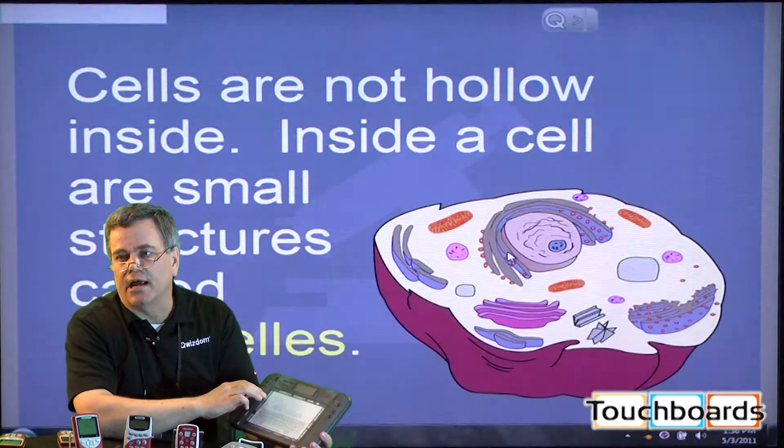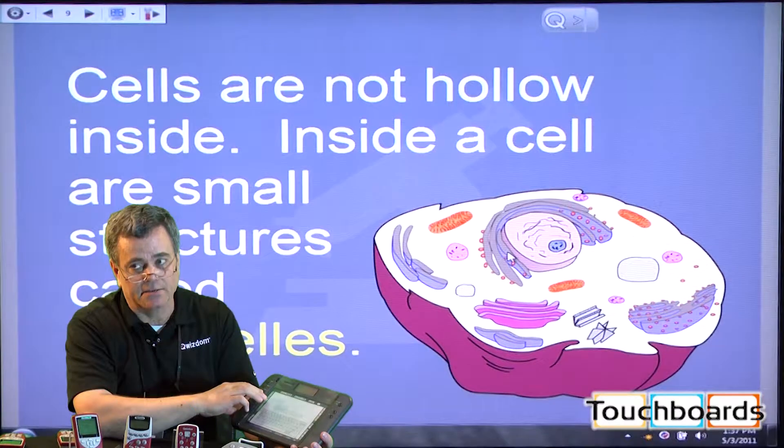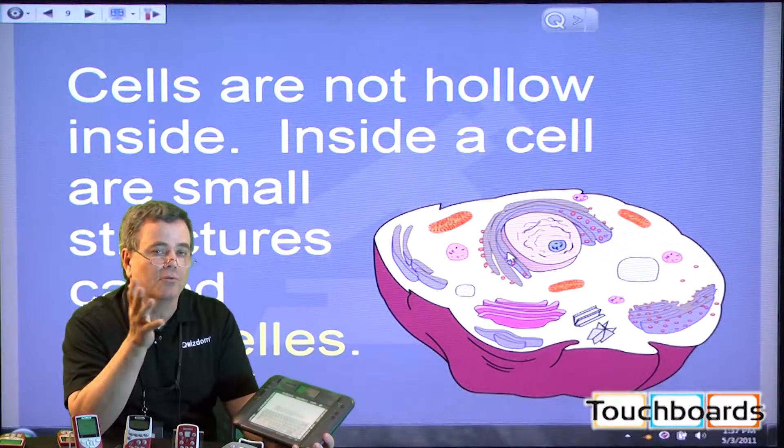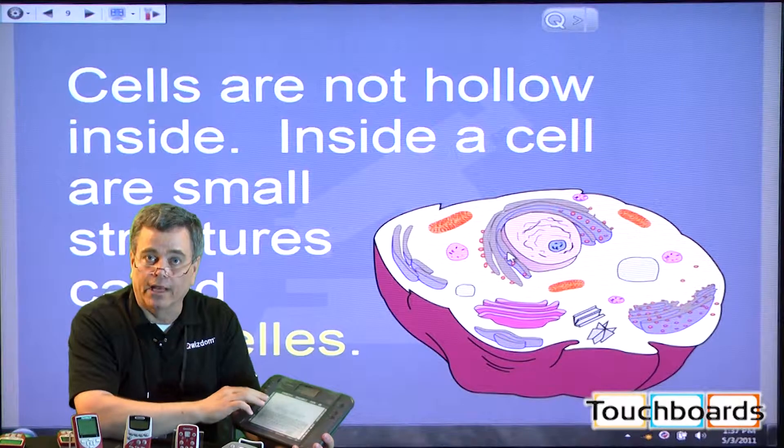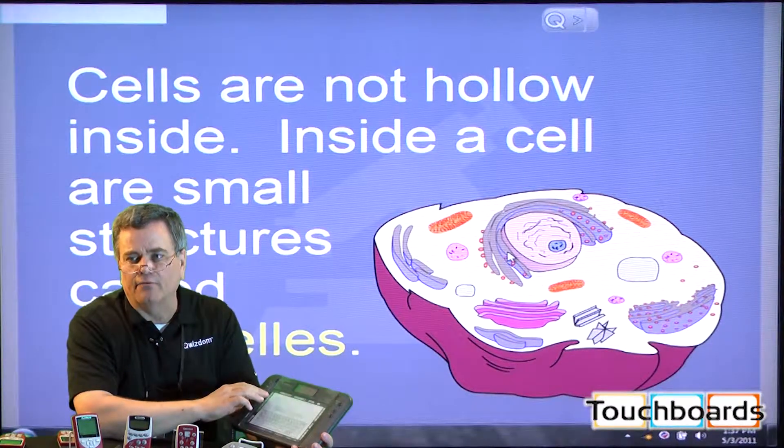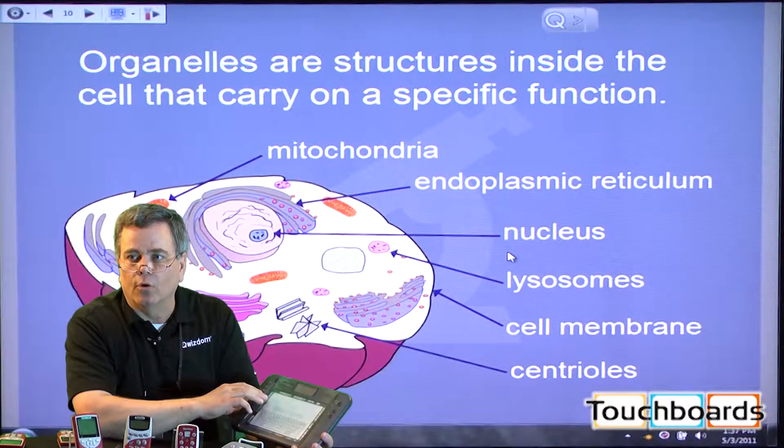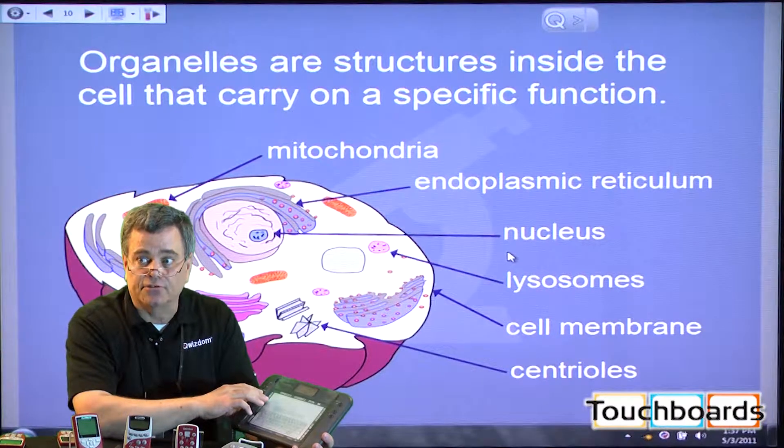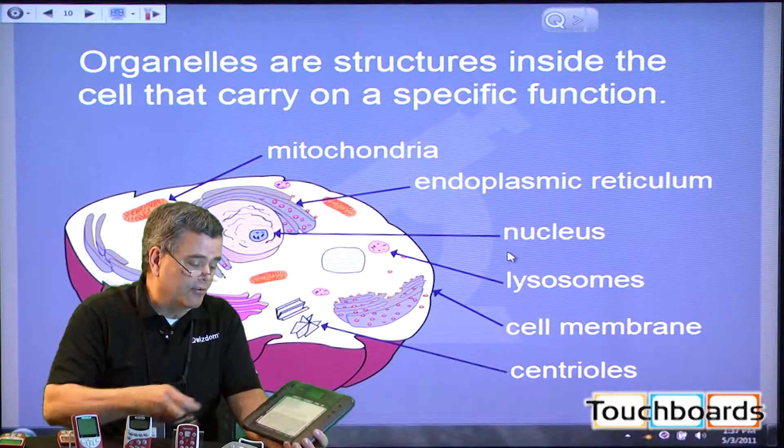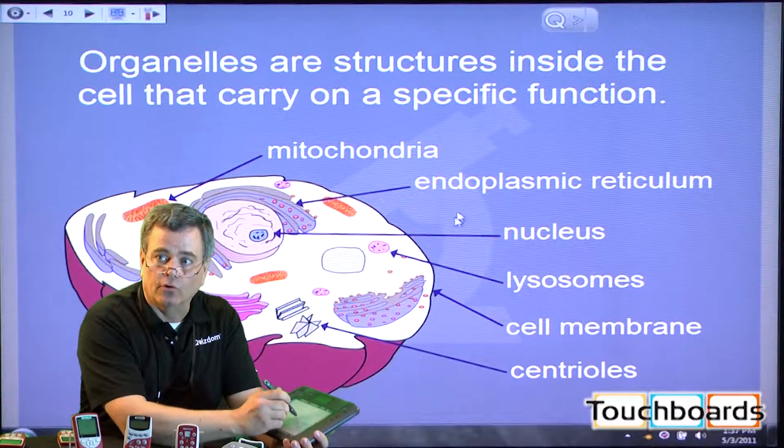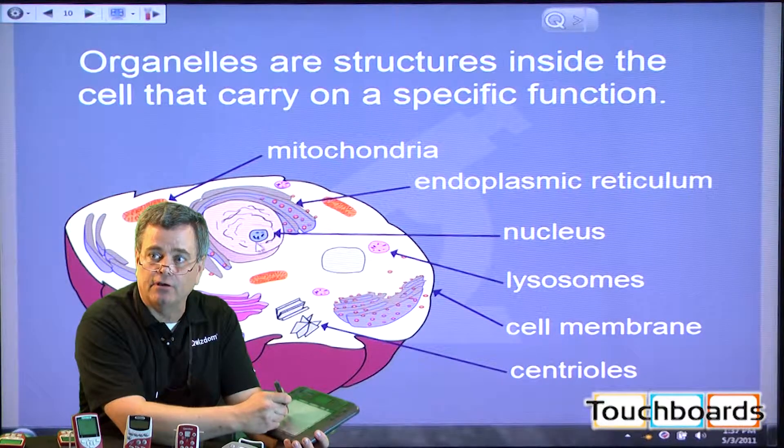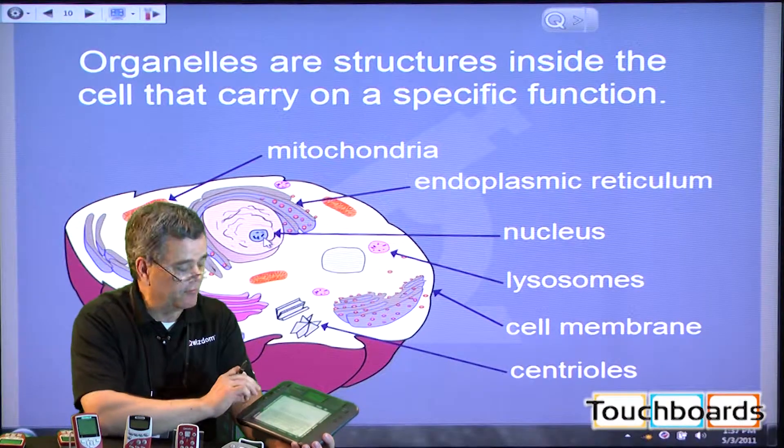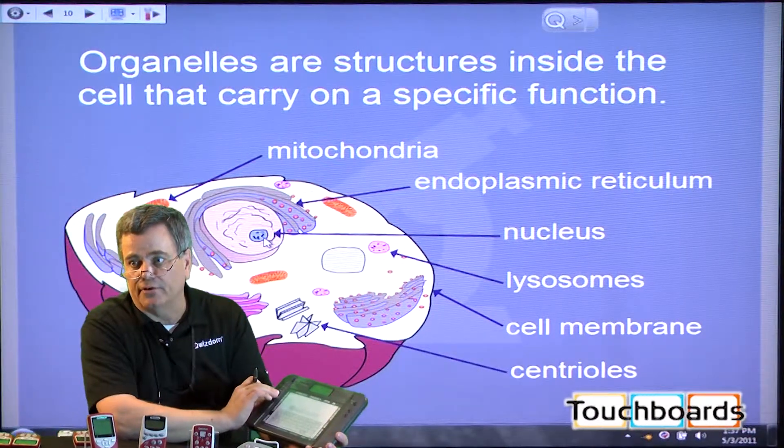Here's an example of a slide from our middle school life science talking about cell structure and how cells are not hollow inside, but inside them are things called organelles, and these organelles carry on a variety of different functions. You have organelles like the mitochondria, the lysosomes, the centrioles, and on the outside of your cell structure you have your cell membrane, and in the center you have your nucleus, which some people refer to as the brain of your cell.